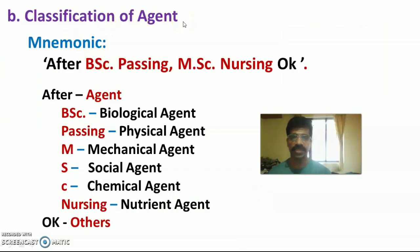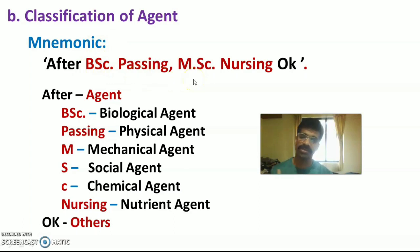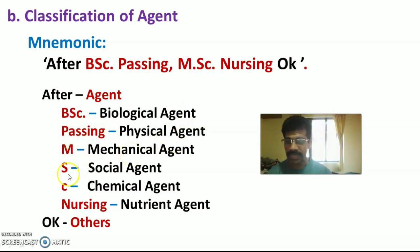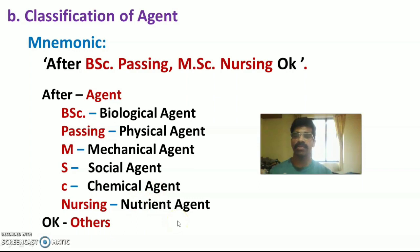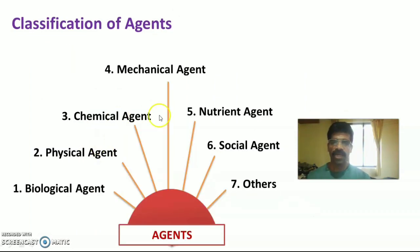Next is the classification of agents. A simple mnemonic is 'After BSc Passing MSc Nursing OK': A = Agent (topic), B = Biological, P = Physical, M = Mechanical, S = Social, C = Chemical, N = Nutrient, OK = Others. Classification of agents includes seven main categories: biological, physical, chemical, mechanical, nutrient, social, and others.